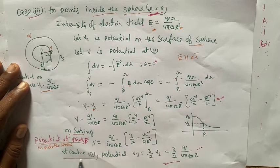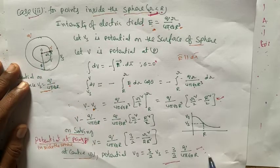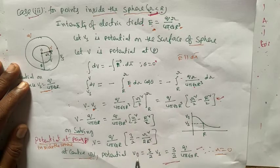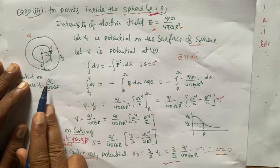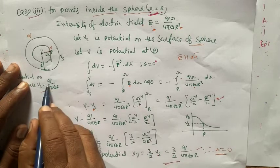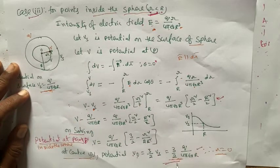At center O, since small r equals 0, the potential at center O is V equals 3/2 times Vs, where Vs equals Q divided by 4 pi epsilon R.